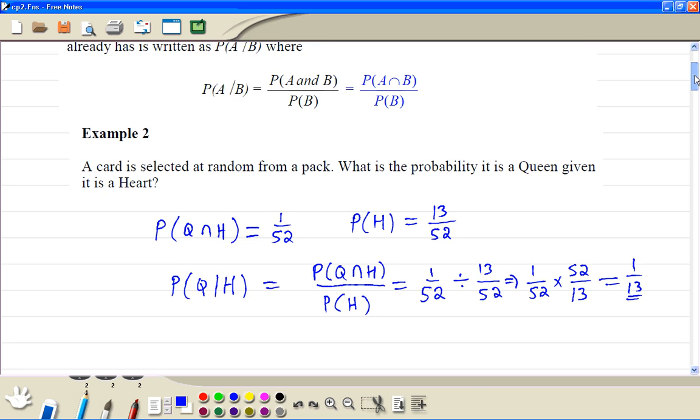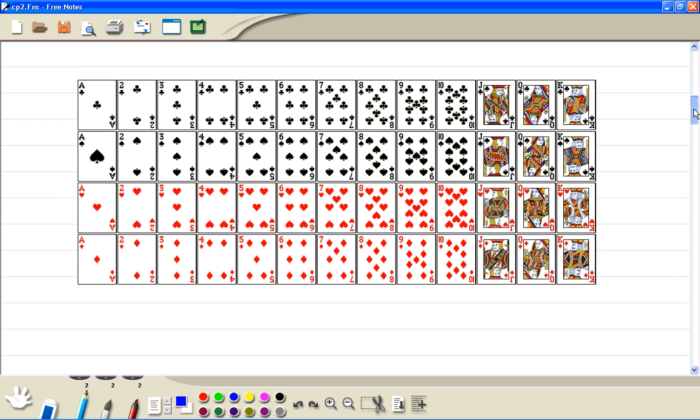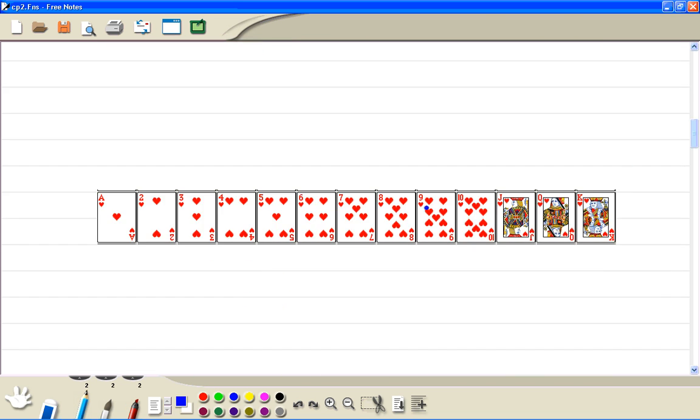Now we try to understand the situation. Here are the pack of 52 cards. Once we are given something, then we are in a subset situation. This is the whole set. When we were given it's a heart, so then we are only considering this set. So we are working on the probability of getting a queen from this set. So there is 1 out of 13.